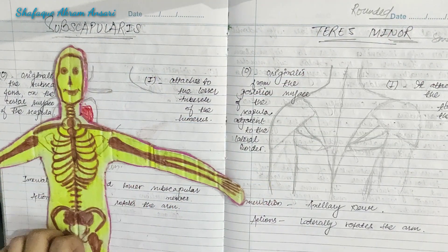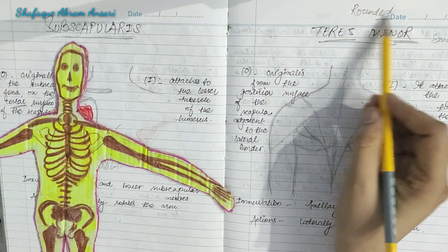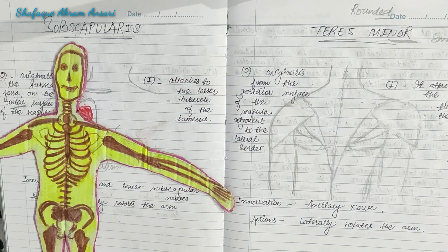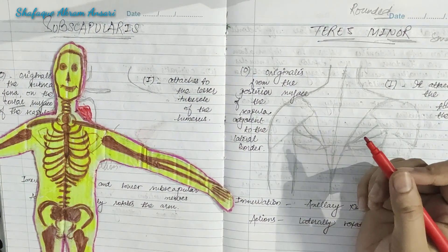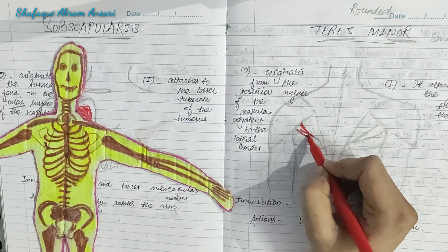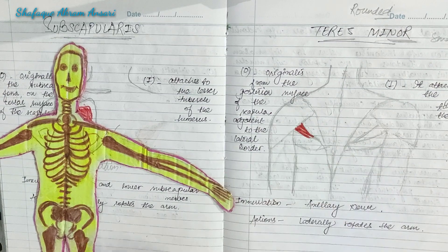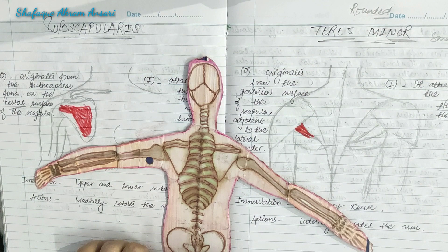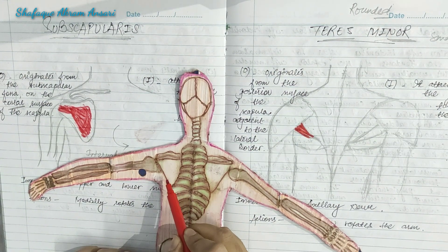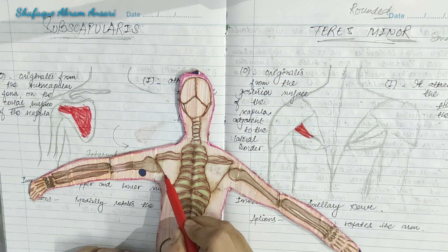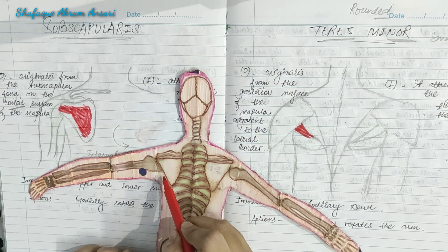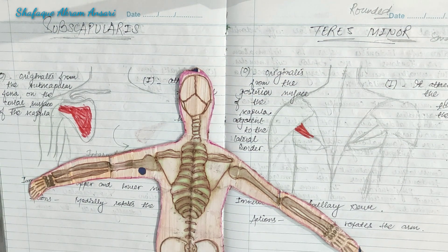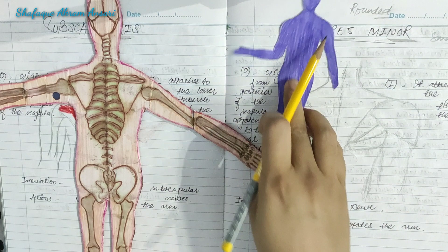The last muscle is teres minor. 'Teres' means rounded and 'minor' means small. It originates from the posterior surface of the scapula adjacent to the lateral border and attaches to the greater tubercle of the humerus. Its innervation is the axillary nerve and its action is to laterally rotate the arm.